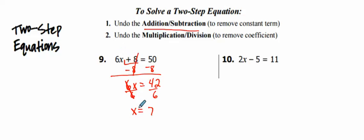All right, so you can always go back and plug it in and make sure it works. So 6 times 7 is 42 plus 8. Yep, that equals 50. So I'm good.